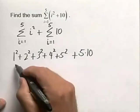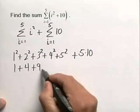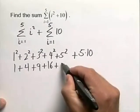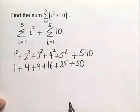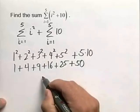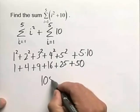So let's simplify. We have 1 plus 4 plus 9 plus 16 plus 25 plus now our 50. Put all this information together and we get a total summation value of 105.